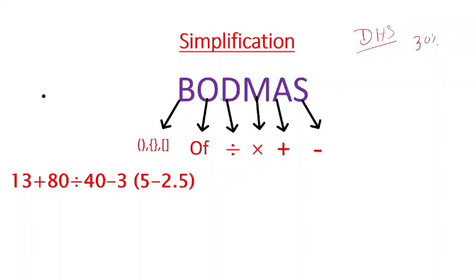Simplification — the main rule to follow is BODMAS. B is for Bracket — there are three brackets here: first bracket, second bracket, third bracket.